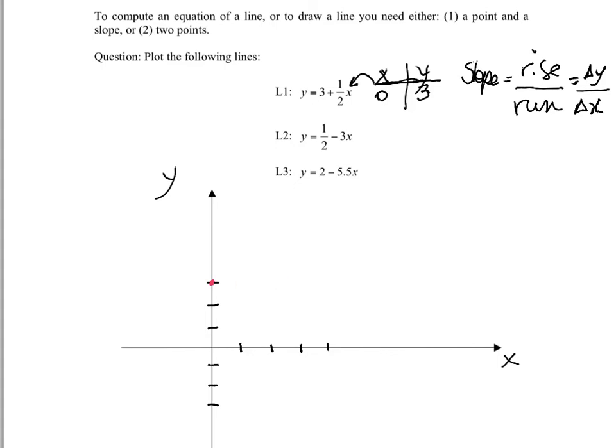And then to get back on the line, we have to rise 1. So I have to go up. And that's where I would put a dot. So here's my second point. And now I can draw a line using a straight edge through those two points. And that is the line. That's line 1.